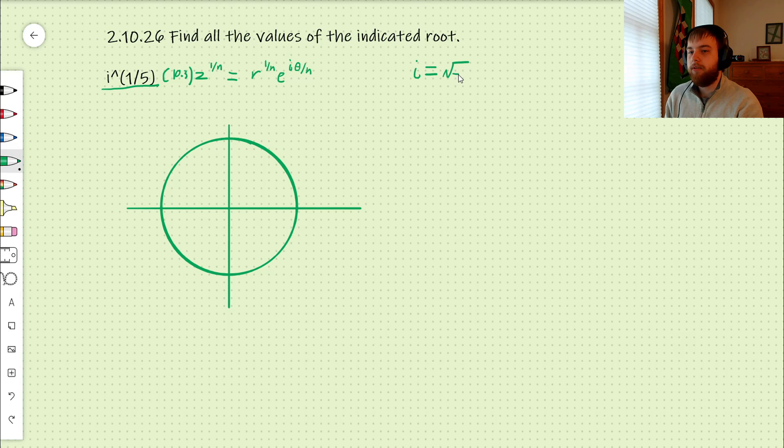is the square root of negative one. But we can also write it as 1 times e to the i times pi over 2. And this form is going to help us out a lot with this problem here.